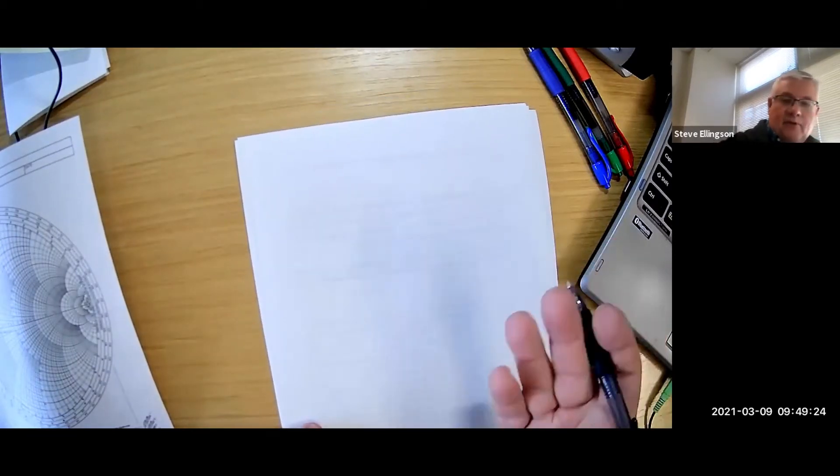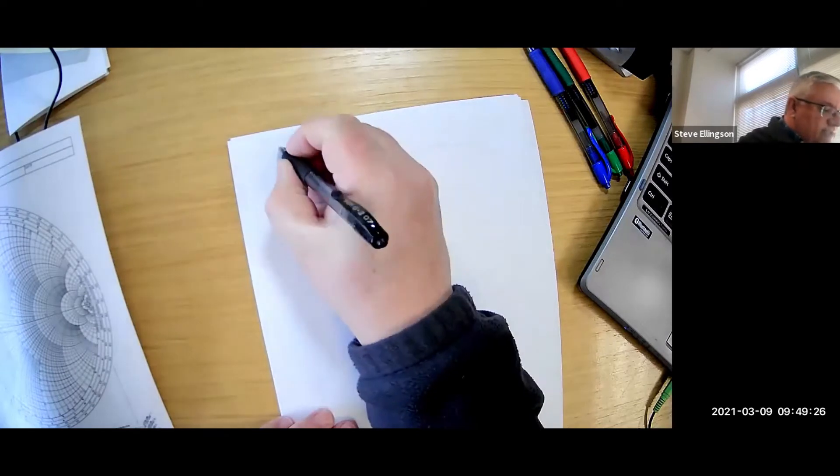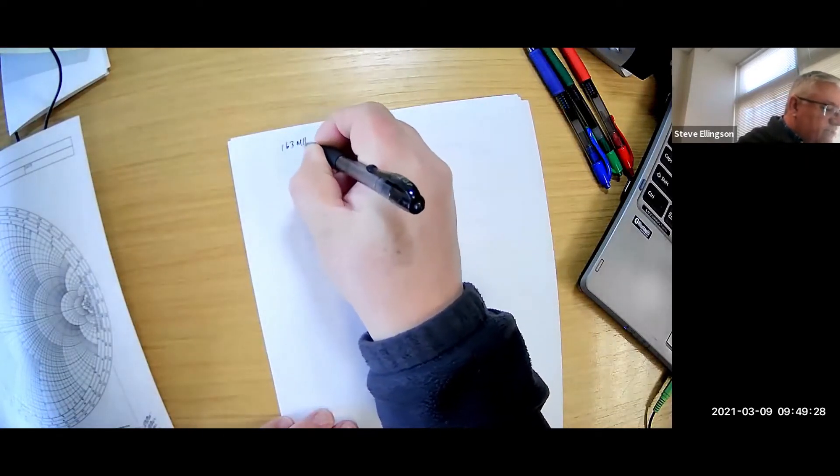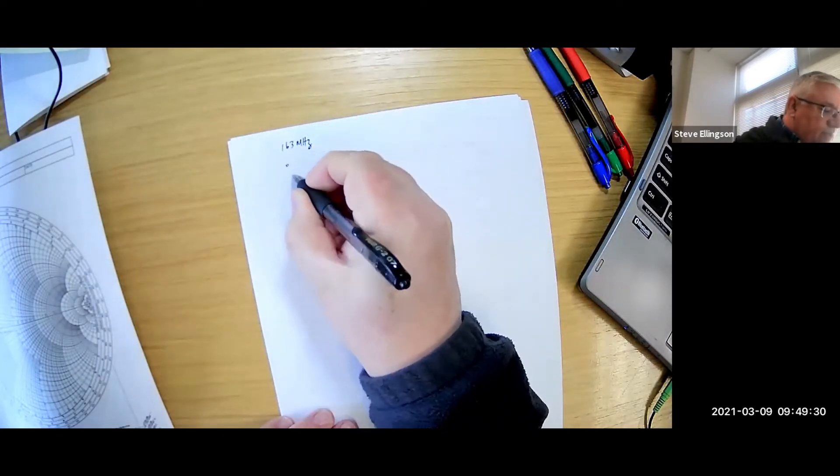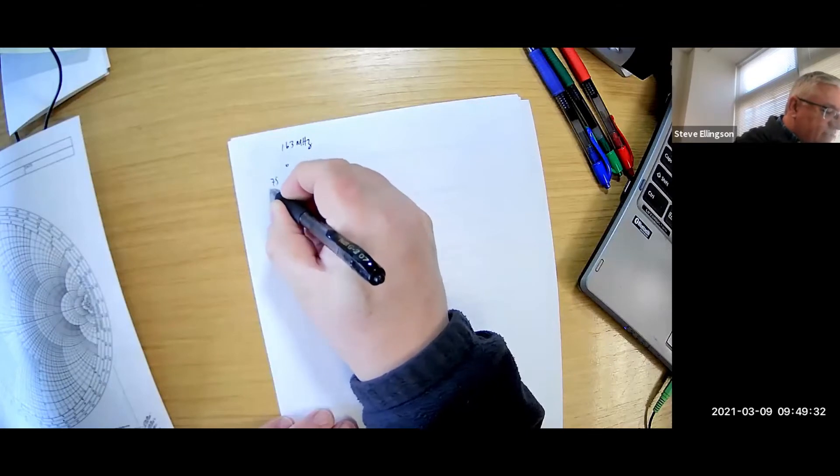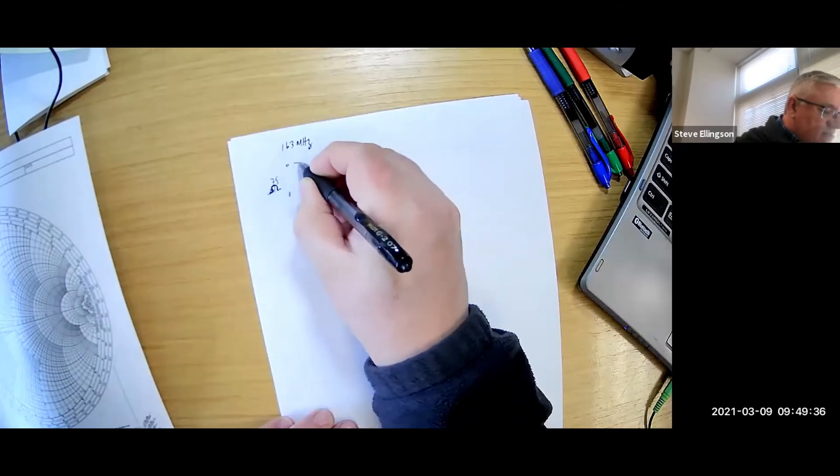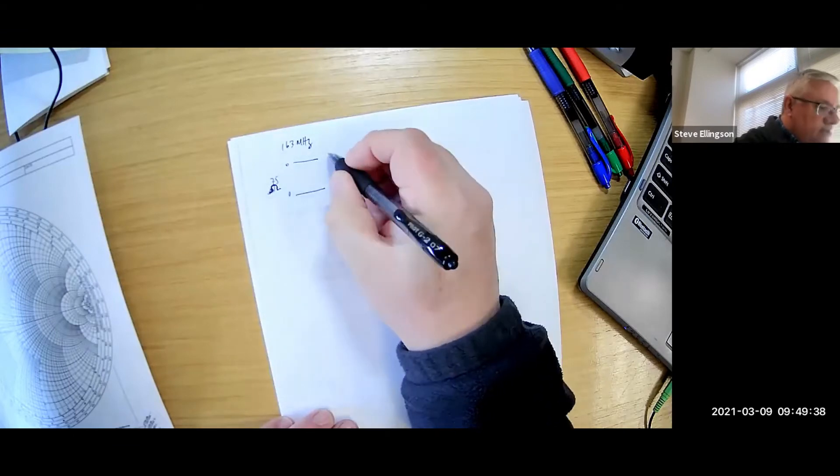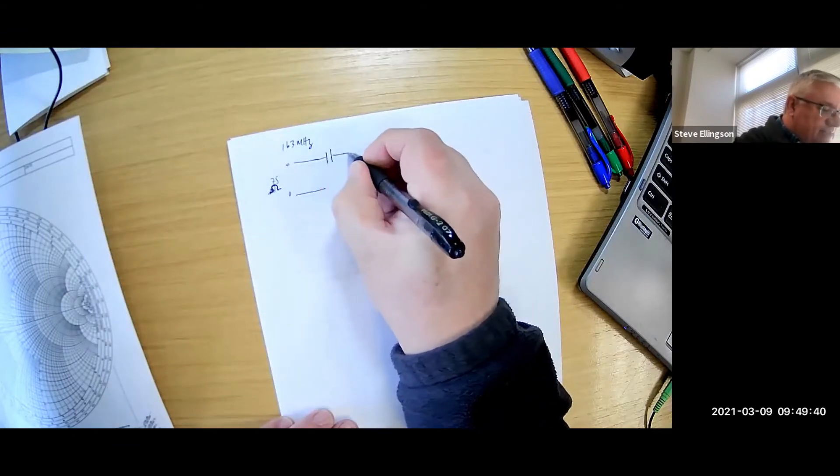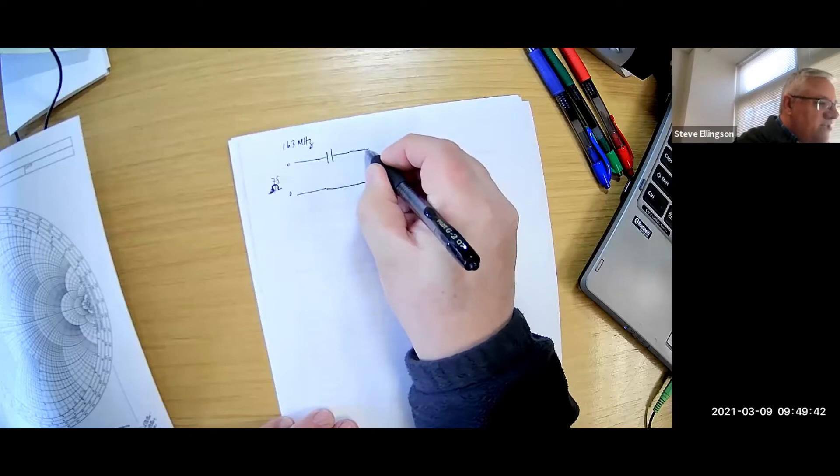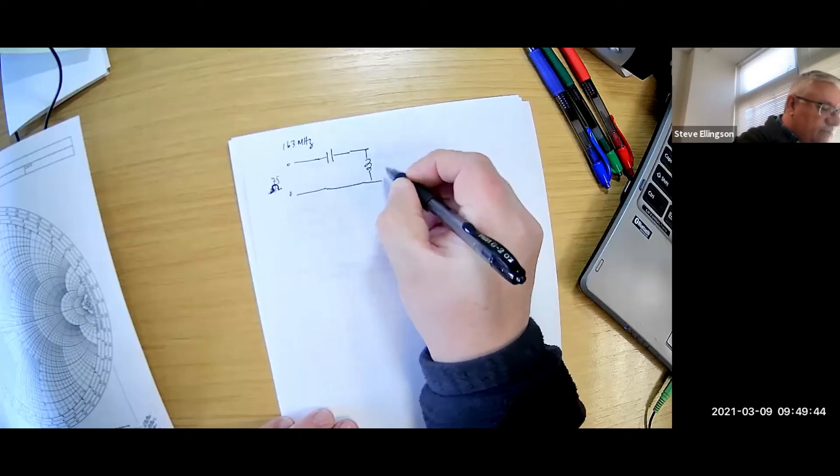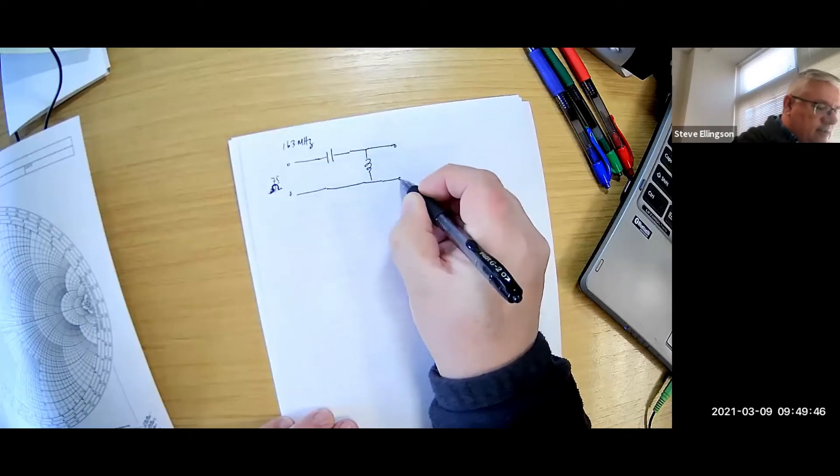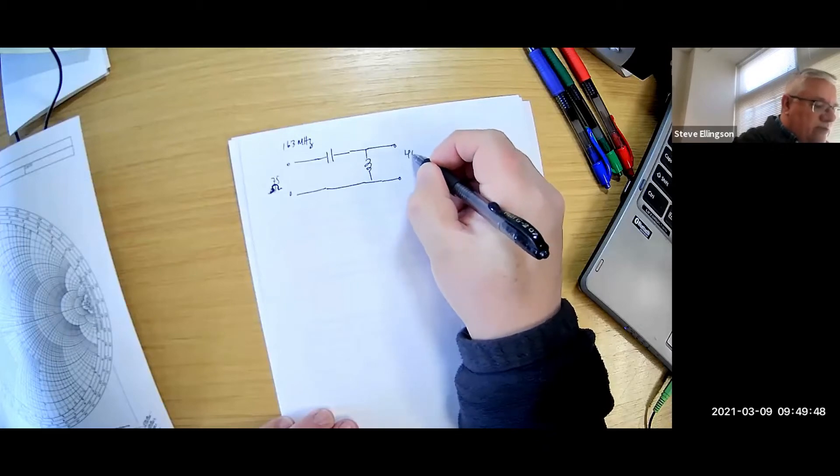If we go back to this example that we did last week, let me redraw this. It was 163 megahertz, we went from 75 ohms through a capacitor, this is one of the two solutions that we did, went through an inductor to 400 ohms.